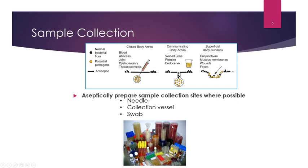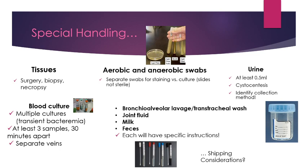We aseptically prepare sample collection sites only where possible — around communicating body areas and over closed body areas. We use the appropriate needle, collection vessel, or swab. For tissues in surgery, biopsy, or necropsy, special handling is required. Blood cultures are taken in a specific way because these bacteria are moving throughout the body — this is called transient bacteremia. We take at least three samples, 30 minutes apart from separate veins, such as the left cephalic, left saphenous, and right jugular, using both aerobic and anaerobic swabs.